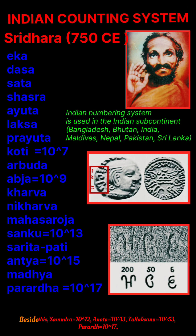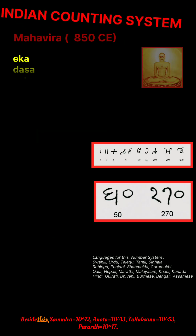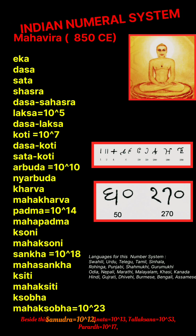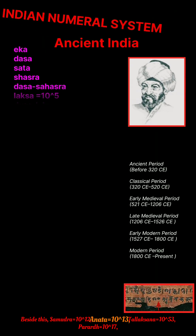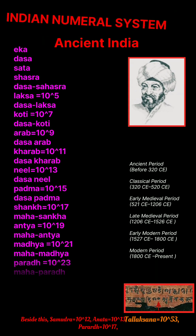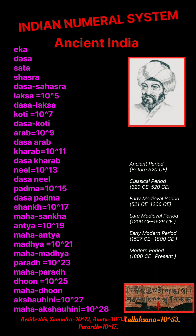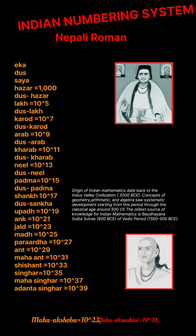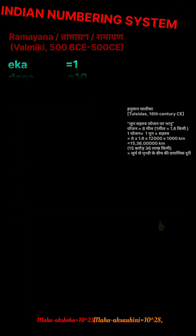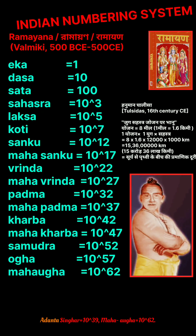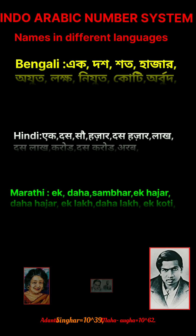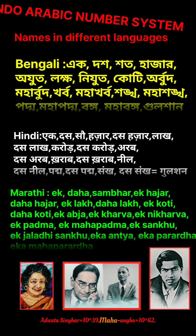Besides this: samudra is equal to 10 to the power 12, amunt is equal to 10 to the power 13, talakshana is equal to 10 to the power 53, artha is equal to 10 to the power 17, moha akshava is equal to 10 to the power 23, moha akshaini is equal to 10 to the power 20, abanta sangha is equal to 10 to the power 39, moha akshava is equal to 10 to the power 62.